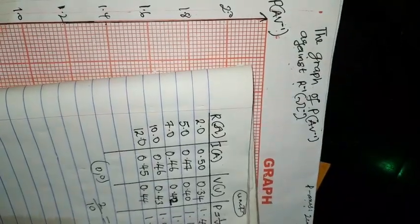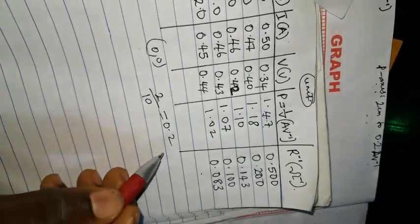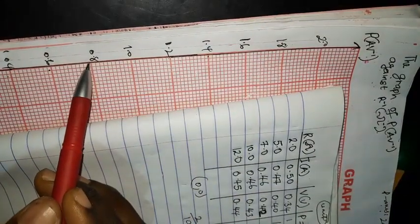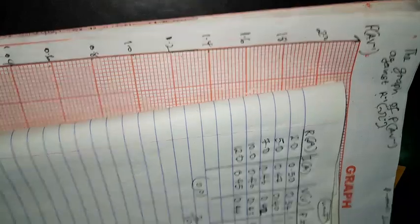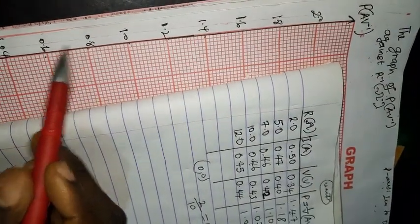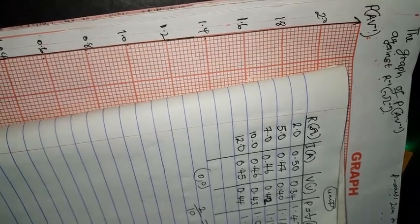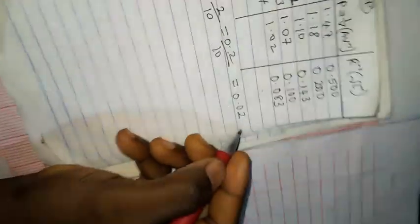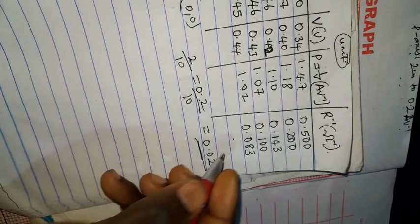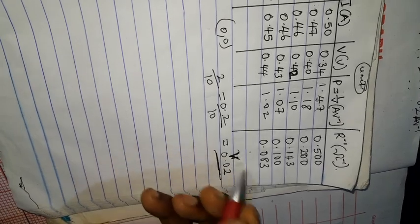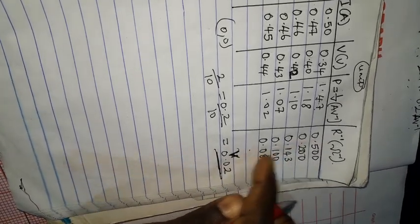Now the next thing you have to do is get a scale factor. Remember that the numerical value between each division is 0.2 as stated. Then you count the number of small boxes — they are exactly 10. So you divide 0.2 by 10. That gives us 0.02. So this is my scale factor on the vertical axis. You can just write it somewhere with a pencil.